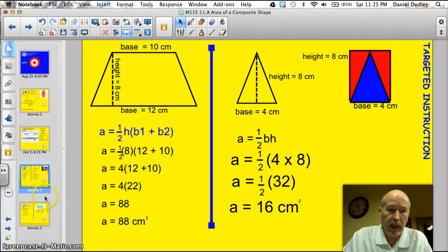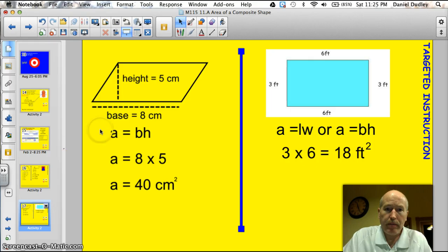Area of a parallelogram. That is just base times height, like a rectangle. The height is 5 centimeters, the base is 8 centimeters. So it's 8 times 5, or 40 centimeters squared. Keep in mind that all area labels are squared. Centimeters squared, feet squared, miles squared, whatever it happens to be.